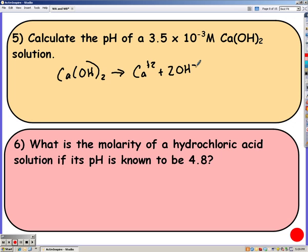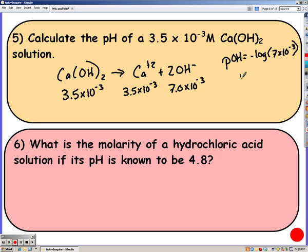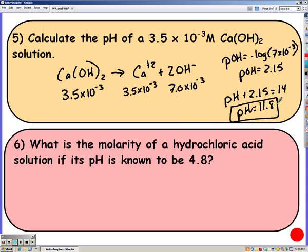So if I have 3.5 times 10 to the negative third of calcium hydroxide, I should have twice as much of hydroxide. Because it's a one to two ratio. You have to be careful of the group 2A hydroxides, because they're all going to produce twice as much hydroxide as the concentration. So I can find my pOH now of 2.15, and then my pH would be 11.8.